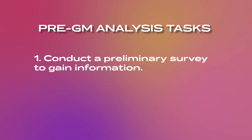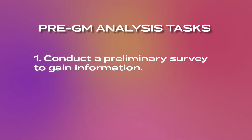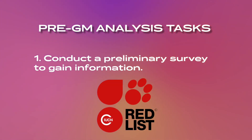First, let's start with the pre-geometric morphometric analysis tasks, where we identify the research gap and species for eventual analysis. Step one: conduct a preliminary survey to gain information. Finding what is lacking in current research is essential to your entire project. You could gather information about your target organism by checking its status on the International Union for Conservation of Nature, or IUCN list.